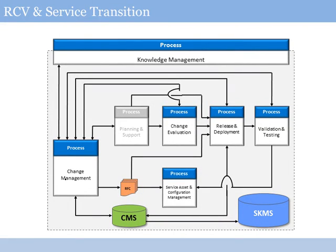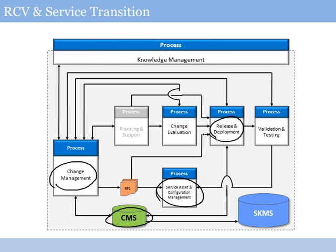When we look at the release control and validation processes, we're working largely in support of service transition activities. I want to be able to use a process like change management as my core governance process — how do we make changes to services, how do we assess them, how do we make decisions about risk and cost and impact? To underpin those change management activities I want to use processes like service asset and configuration management and tooling like a configuration management system to make those impact assessments using accurate configuration baseline information.